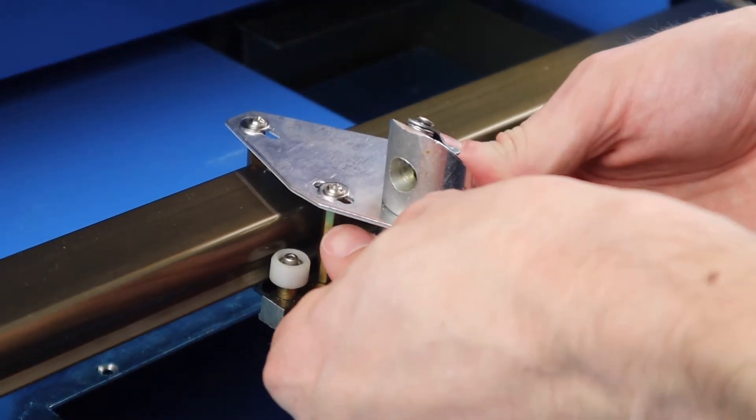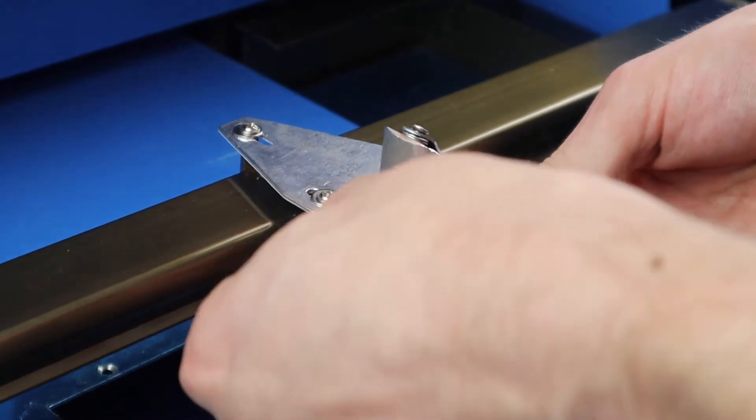Slide the bracket onto the bottom of the head of the laser and then secure it with another M3 x 15 hex head screw.